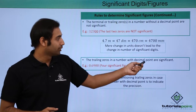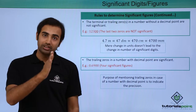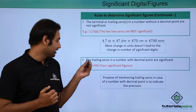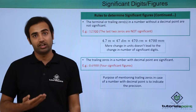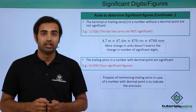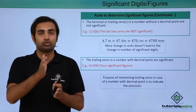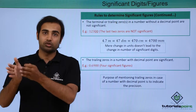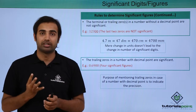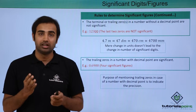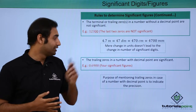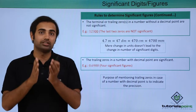Trailing zeros in a number with a decimal point are significant. So if we have a decimal point in the number, all the trailing zeros will be considered significant. For example, 0.6900 clearly has 4 significant figures because there is a decimal point and the trailing zeros are now significant. The purpose of mentioning trailing zeros in a number with a decimal point is to indicate precision — if one instrument measures a mass as 2.1 kilograms and a second instrument measures 2.100 kilograms, the second instrument is clearly measuring up to 4 decimal places while the first can only measure up to 1 decimal place, making it much more precise.